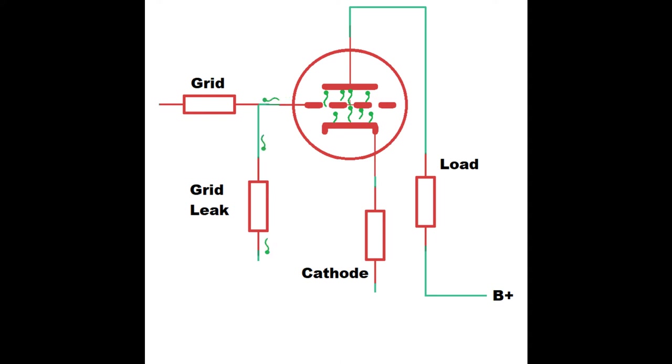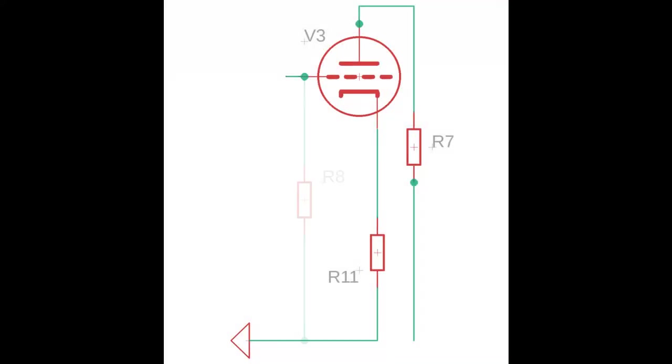So we add in a large value resistor here going directly to ground so we can bleed off this excess voltage. This resistor is usually called the grid leak resistor. Now the value of this resistor should be large enough so that it does not interfere with our signal coming in. So usually we just pick one between one or two megs.